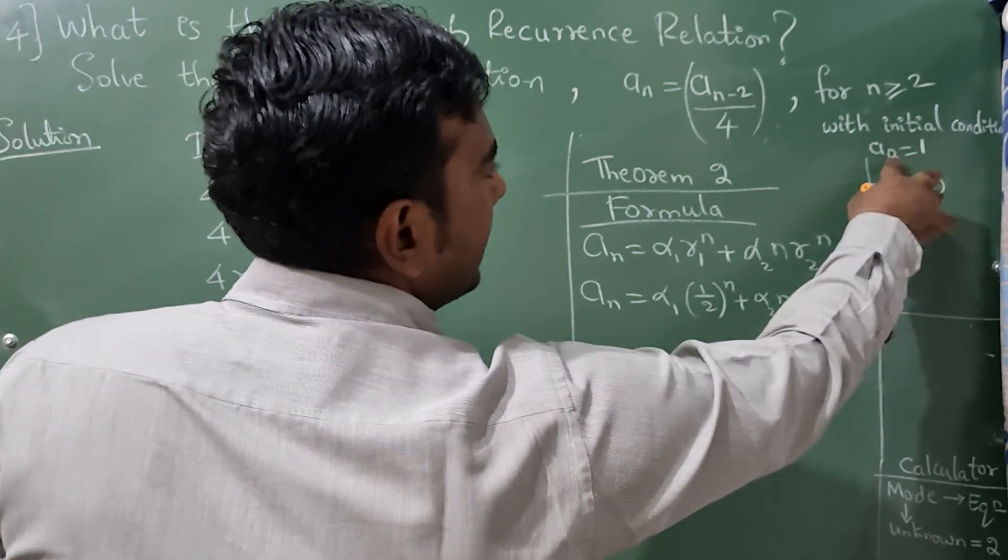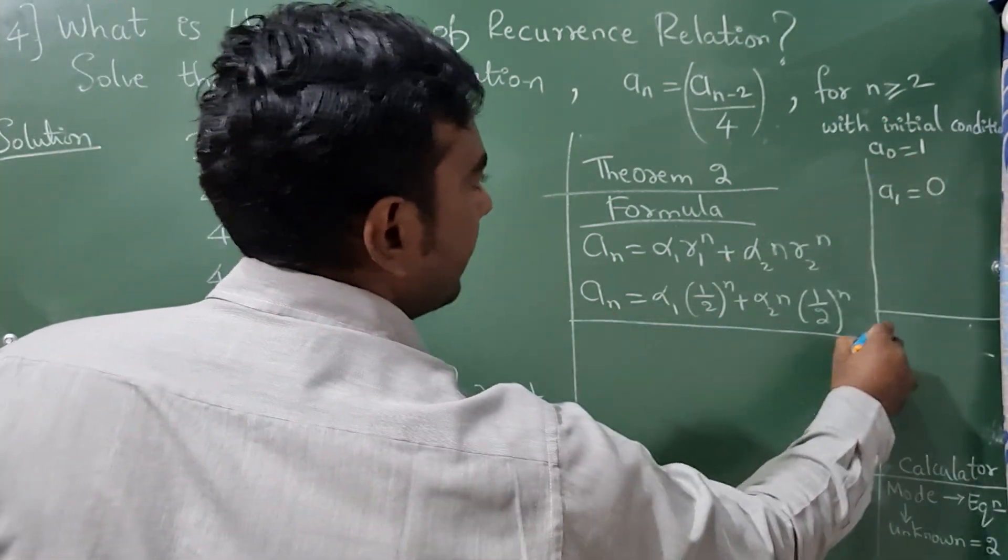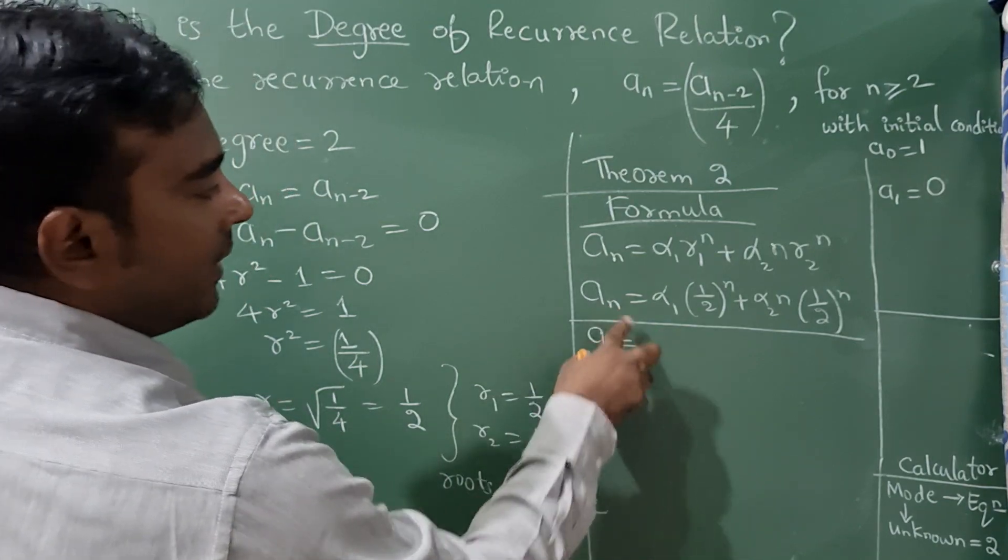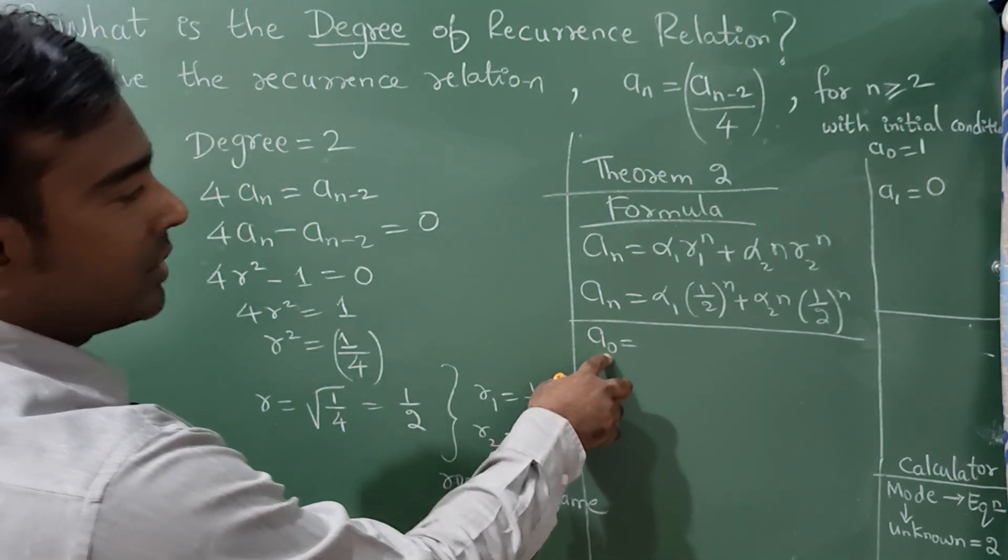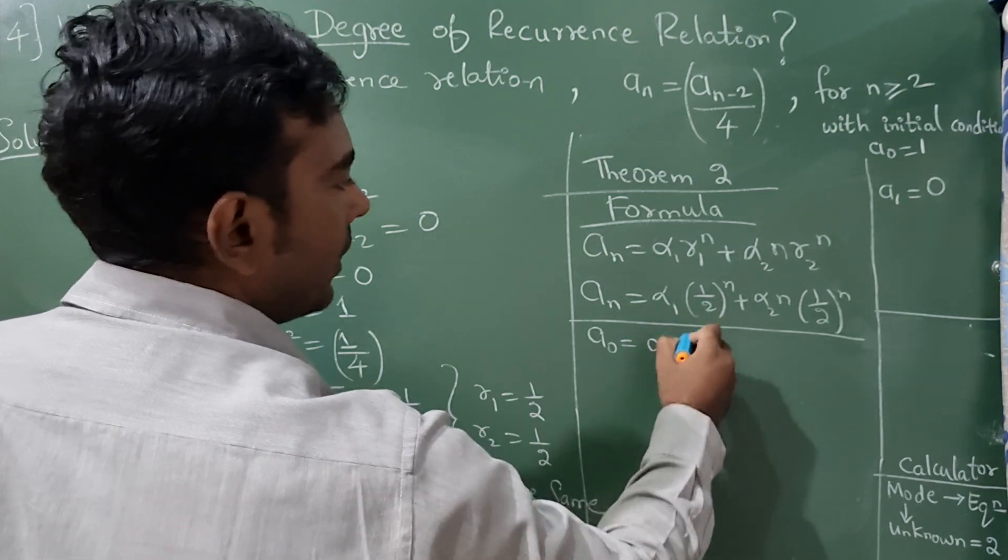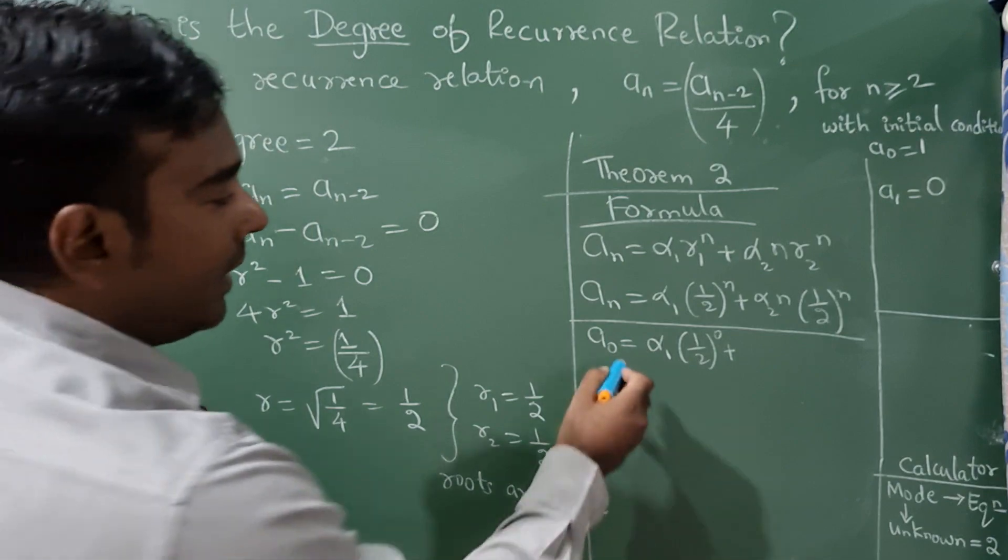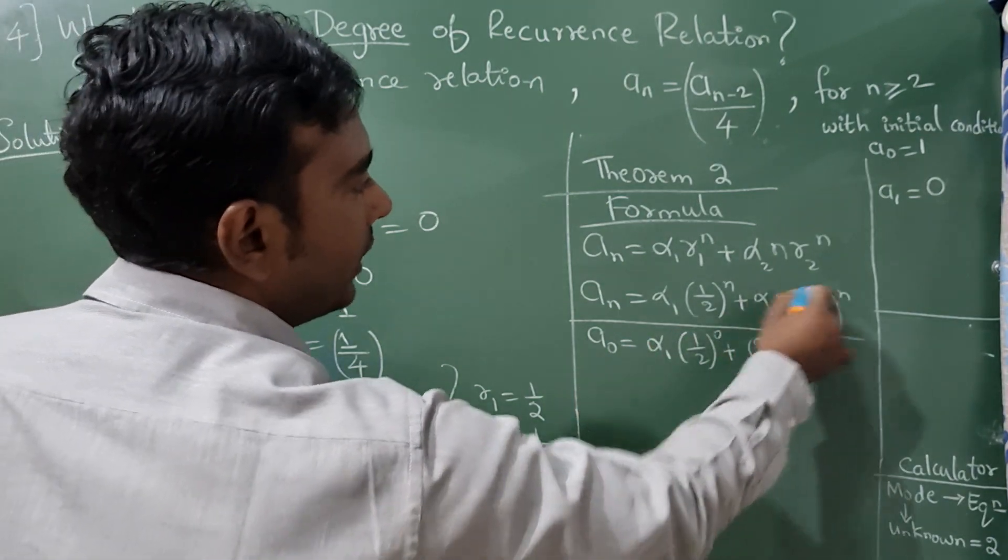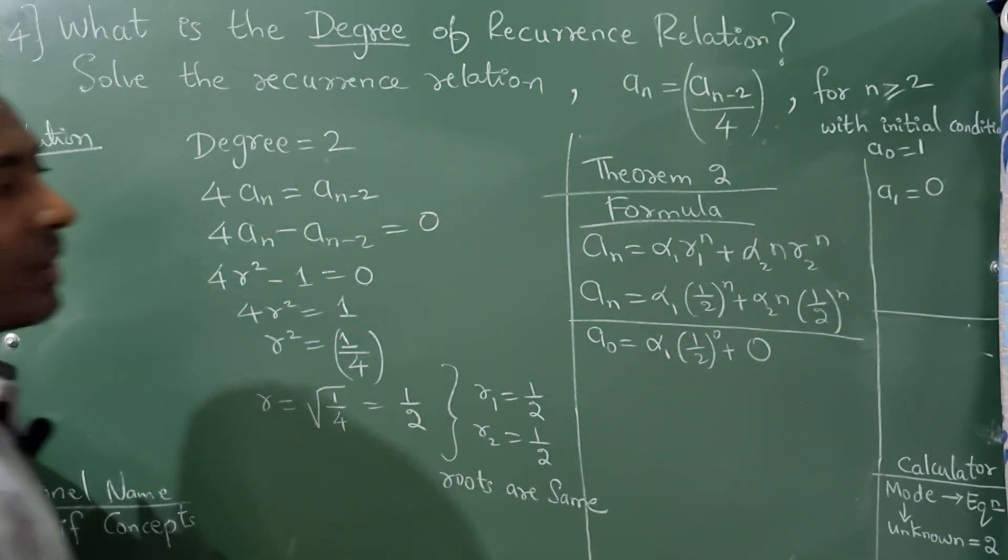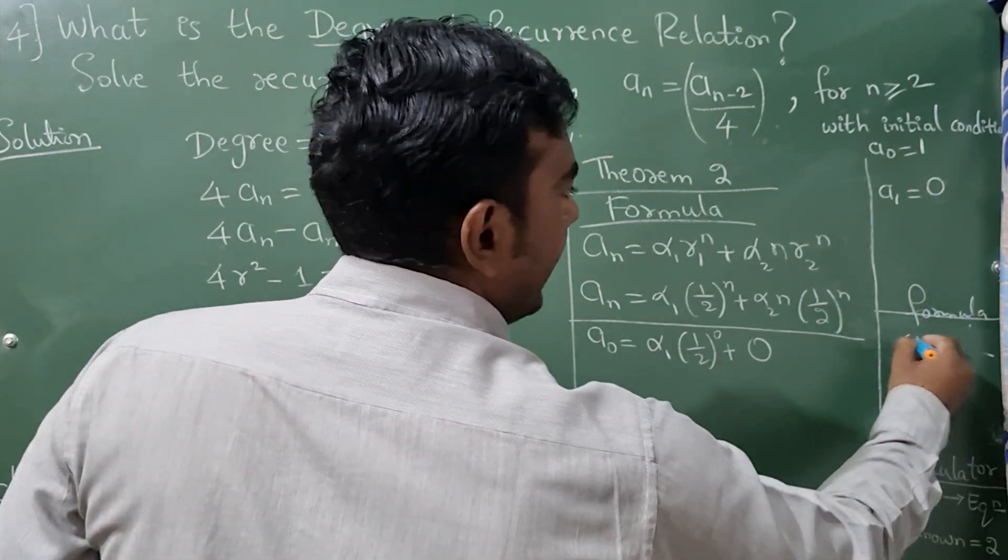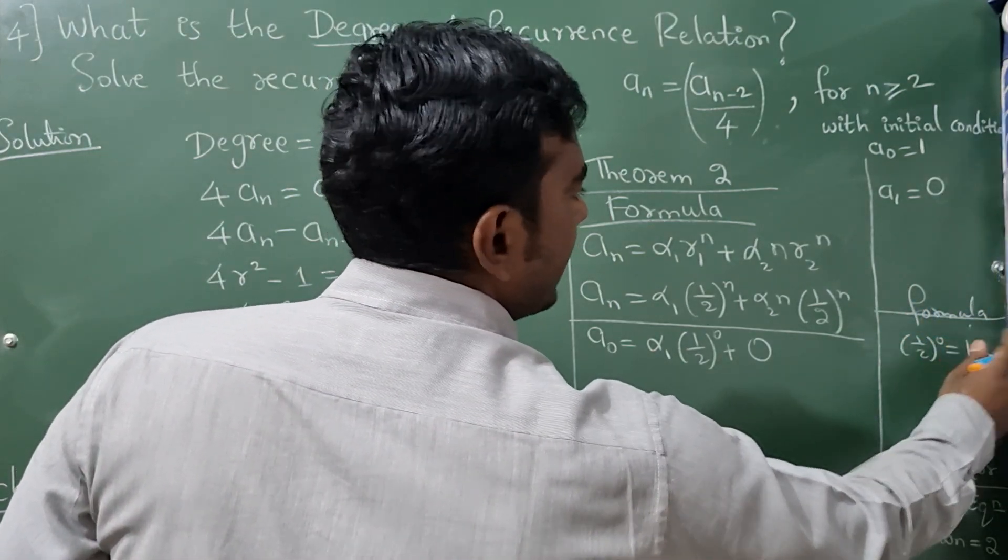Now initial condition they have given a_0. So in place of n substitute 0: (1/2)⁰. The n value is 0 so the whole term will become 0. Now there is a formula, anything raised to 0 is 1.